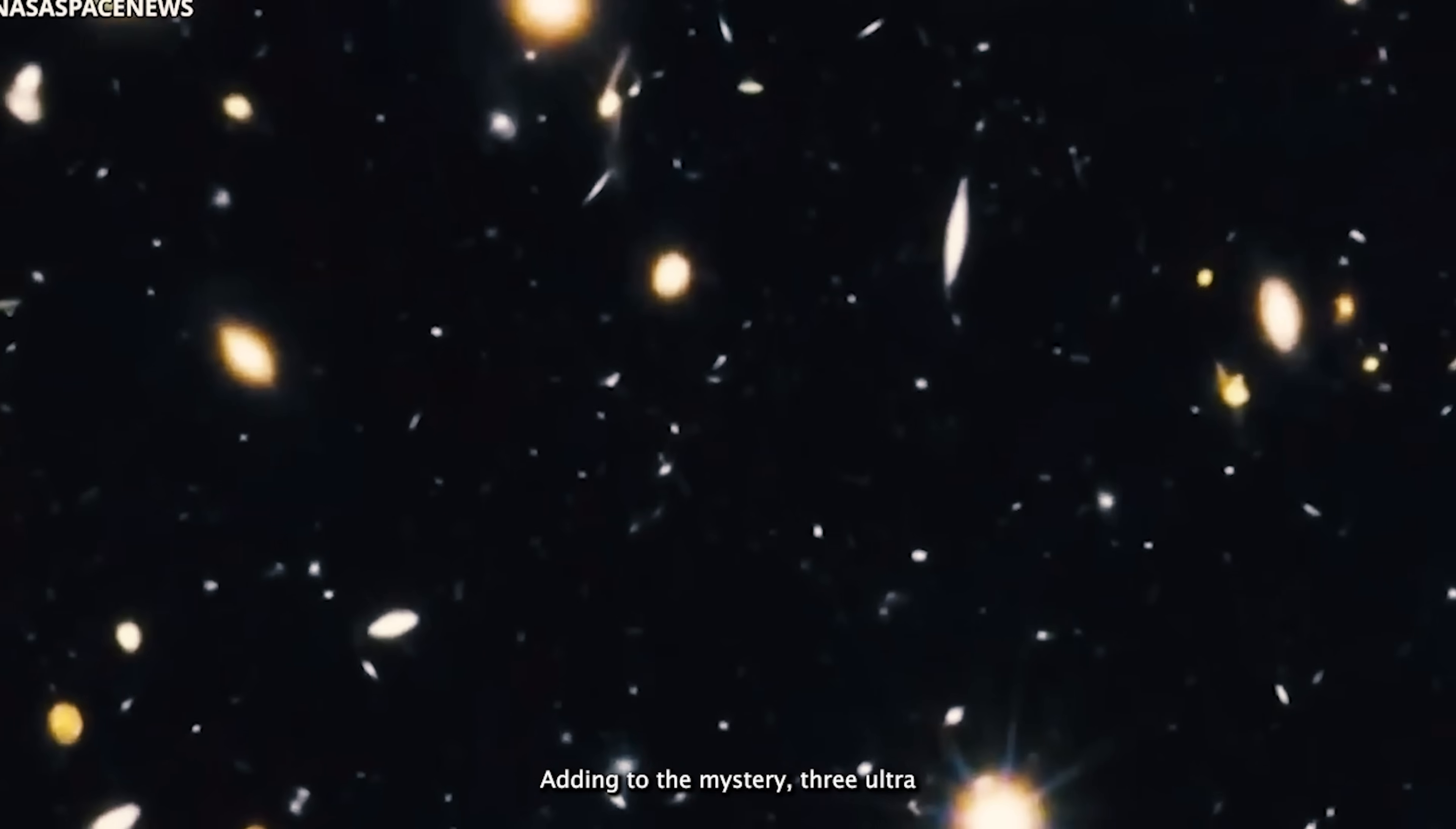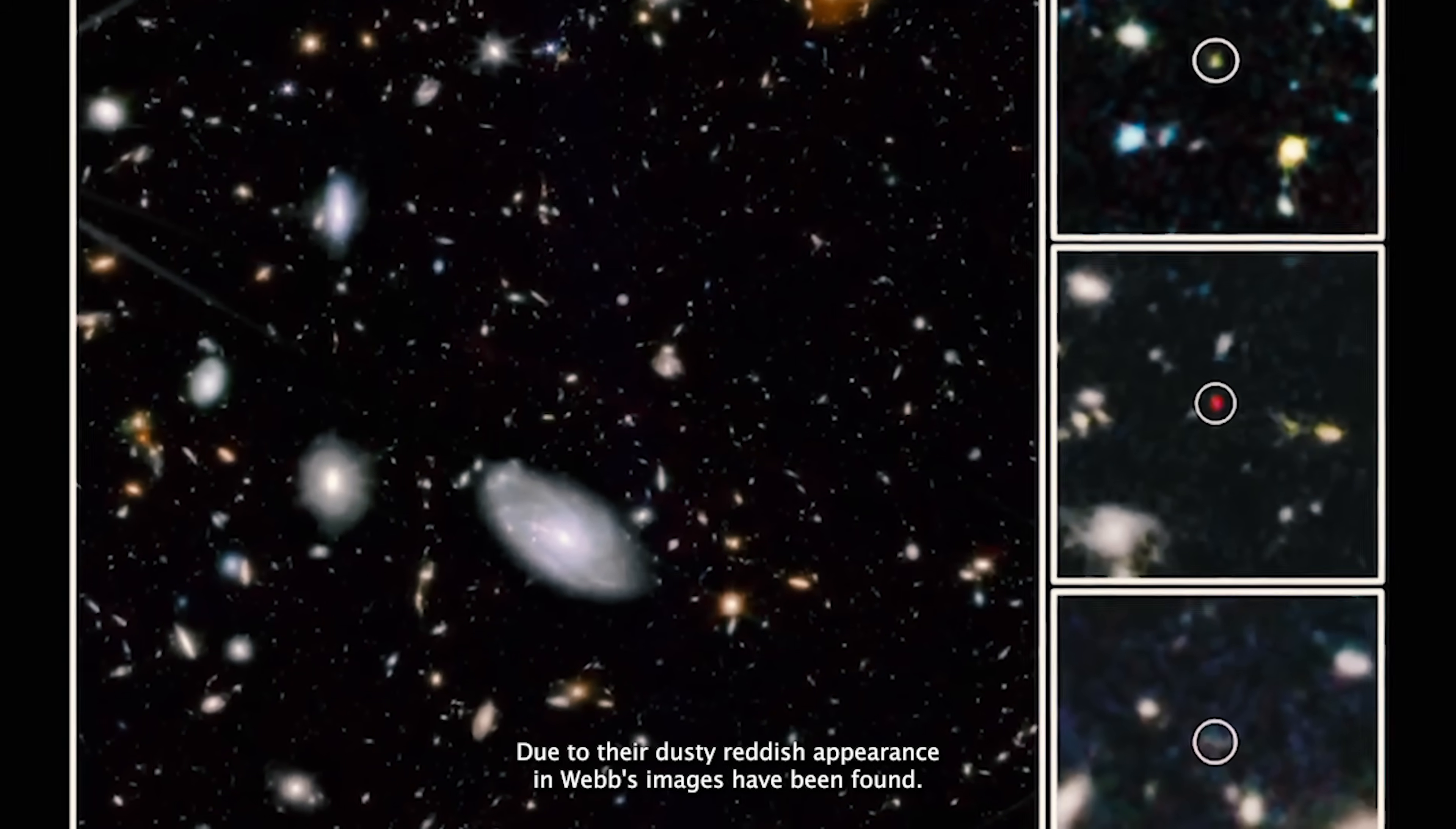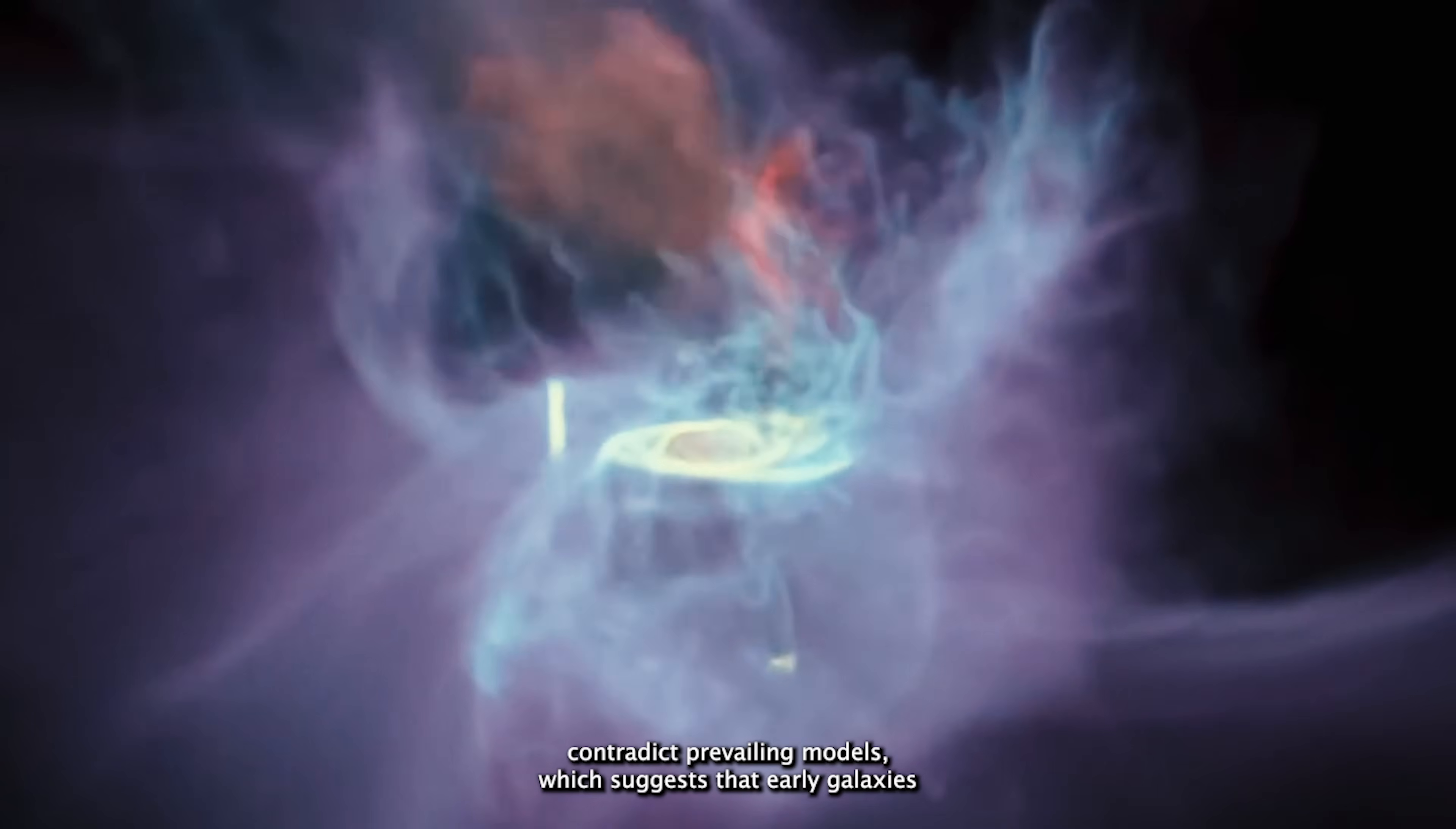Adding to the mystery, three ultra-massive galaxies, nicknamed Red Monsters due to their dusty, reddish appearance in Webb's images, have been found. These galaxies, each rivaling the size of the Milky Way, contradict prevailing models.